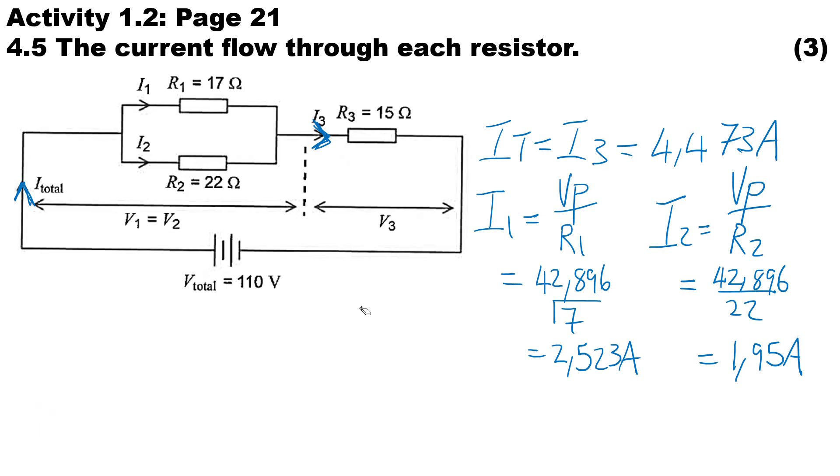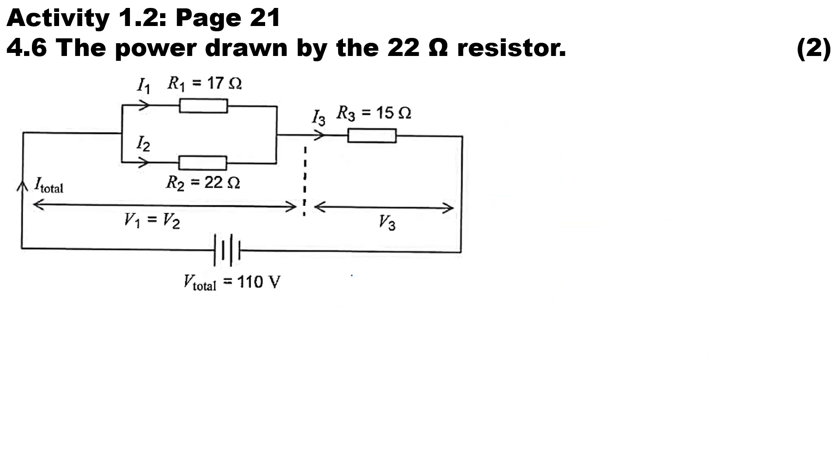Let me just move this out of the way so it doesn't confuse anyone. Okay, let's move on to the last question, 4.6: calculate the power drawn by the 22 ohm resistor. So just to highlight, here's the 22 ohm resistor, and we want to know how much power is dissipated by this resistor.